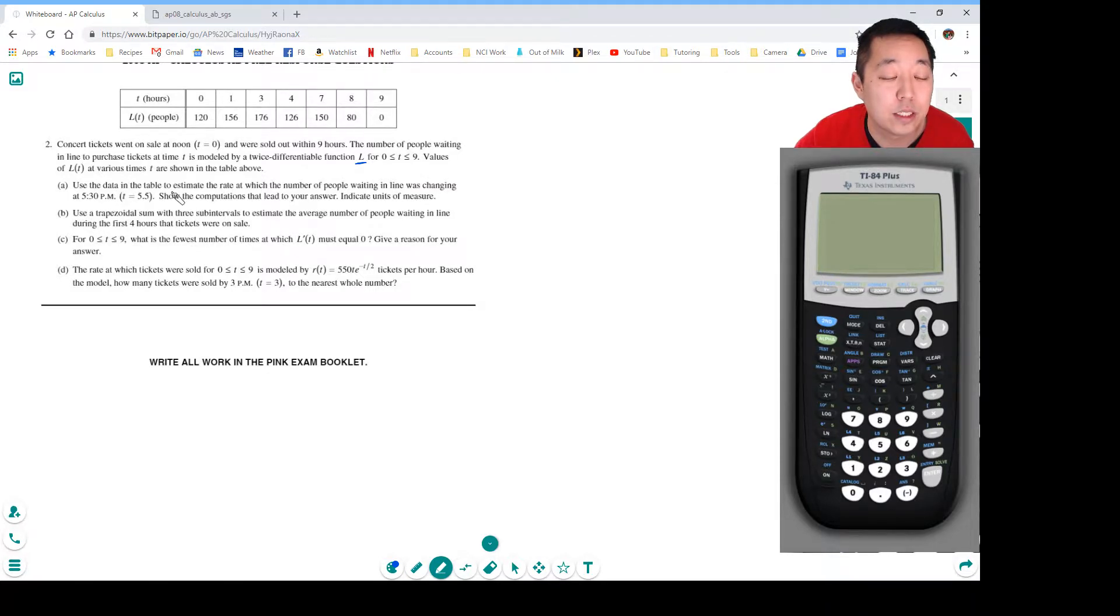Using the data in the table, estimate the rate at which people were waiting in line was changing at T equals 5.5. Show the computations that lead to your answer and indicate units of measure.